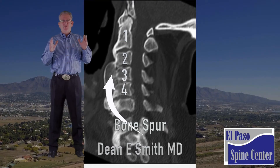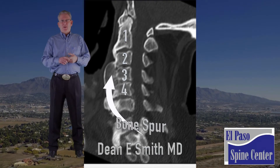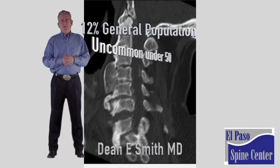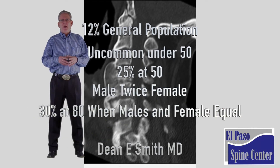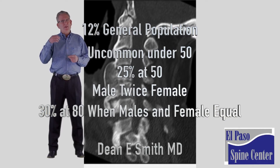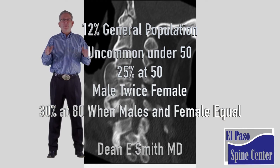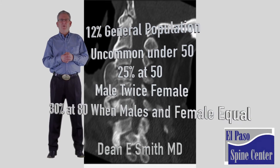It is an extremely common condition. In the general population, it is about 12 percent. It is uncommon before the age of 50, and by the time you hit 50, there's a 25 percent chance that you will have DISH. It is twice as common in males as in females until you hit the age of 80, when the incidence is about equal, and the incidence at 80 is about 30 percent in the general population.